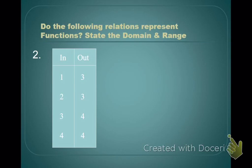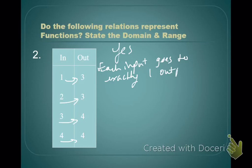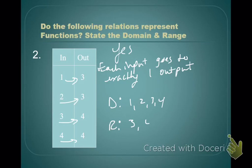Number 2. Does every input go to exactly one output? 1 goes to 3, 2 goes to 3, 3 goes to 4, 4 goes to 4. Each input goes to exactly one output. It's okay if some of those outputs are the same — this is still a function. Why? Because each input goes to exactly one output. Our domain is 1, 2, 3, 4. Our range is the list of different outputs, which is just 3 and 4. You don't have to write down duplicates — just list the different values.